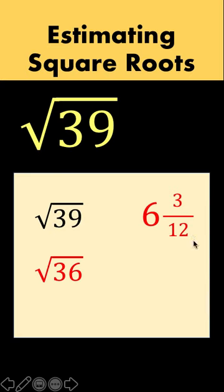And then double this 6 to get 12. 3 over 12 is 1 fourth, so we have 6.25. And the precise value of the square root of 39 is 6.2449. And notice that our value is very close to the actual square root of 39.